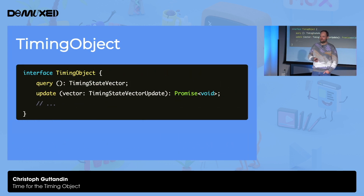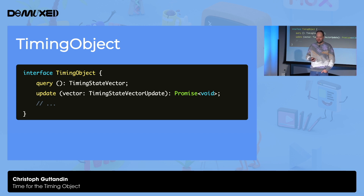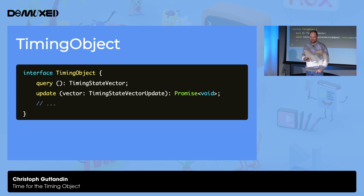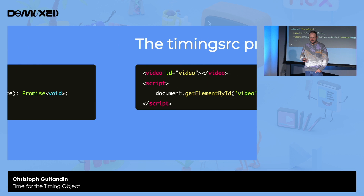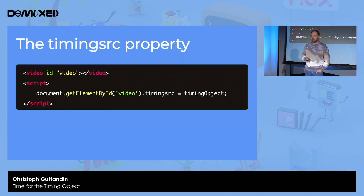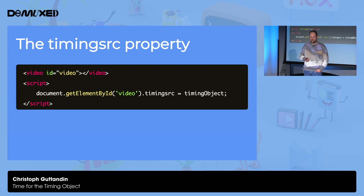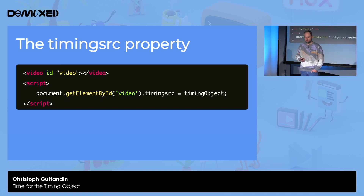The timing object itself is a lightweight class which wraps this vector and takes care of it. It has basically only two methods: query the current vector, which gives you the current vector, and update it, which updates the current vector. It may also fire an event when the vector gets changed externally, and we'll see how that can happen in a minute. The spec also defines a timing source property that anything controlled by a timing object should implement — for example, on a video element or a custom web component.